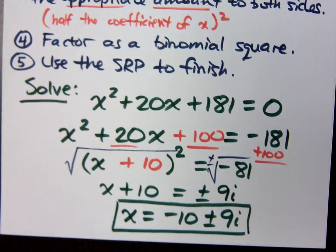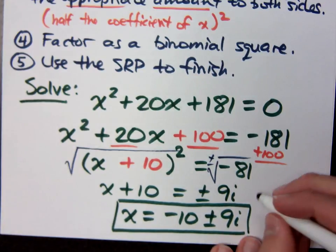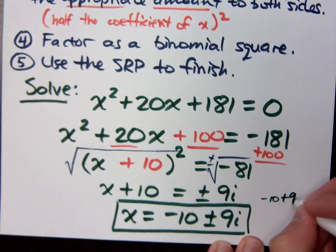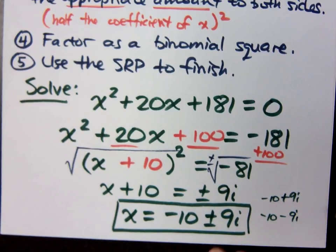What you will notice here — and we'll talk about this more later this semester — is that when you have complex solutions, they occur in conjugate pairs. Negative 10 plus 9i and negative 10 minus 9i are complex conjugates.